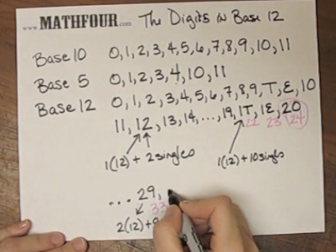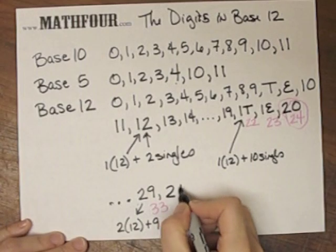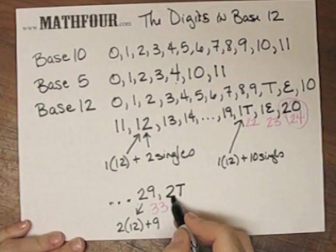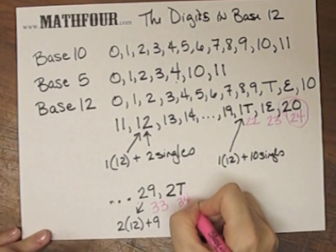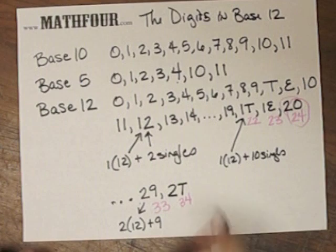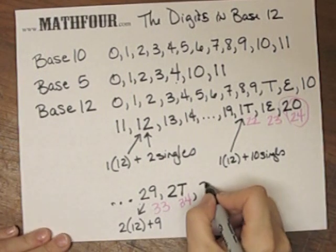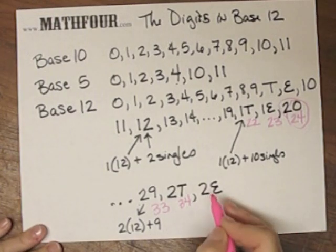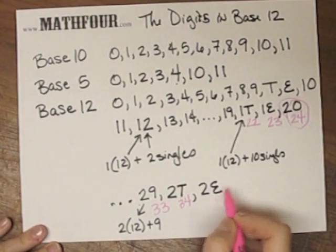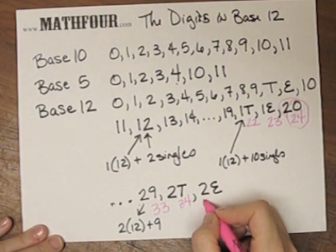So this is 24 plus 9 is 33. 2, 9, what comes after 2, 9? 2T, 2, 10. This is 2 sets of 12, which is 24 plus 10, which is 34. And what's after 2T? 2E, 2 sets of 12 and 11 singles. So that's 24 plus 11 is 35.